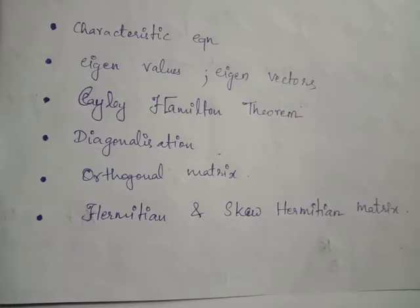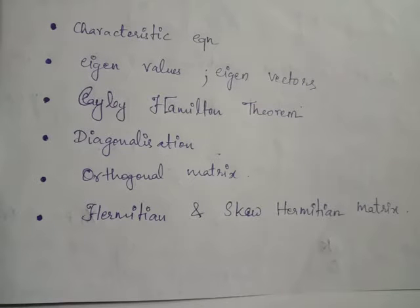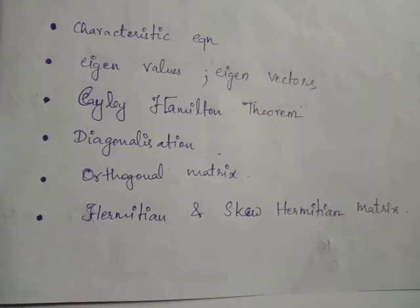Before we wind up module 1, let us rewind the topics that we have already discussed. All concepts discussed in this module revolve around square matrices. The first concept was the characteristic equation, given by the determinant of A minus lambda I equals 0, where A is the square matrix and I is the identity matrix of the same order as A. The roots of the characteristic equation are eigenvalues, also called latent roots or characteristic roots.